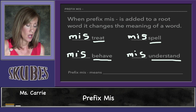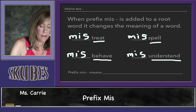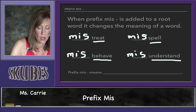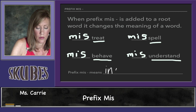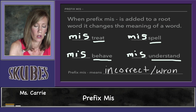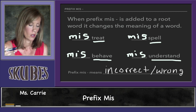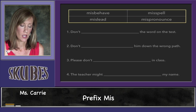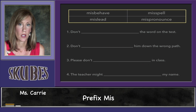So the prefix 'mis' means incorrect, or it could also mean wrong, which are really close to the same thing. Now let's read some sentences and see if we can find the word from the word bank at the top to fill in the blank and make the sentence make sense.